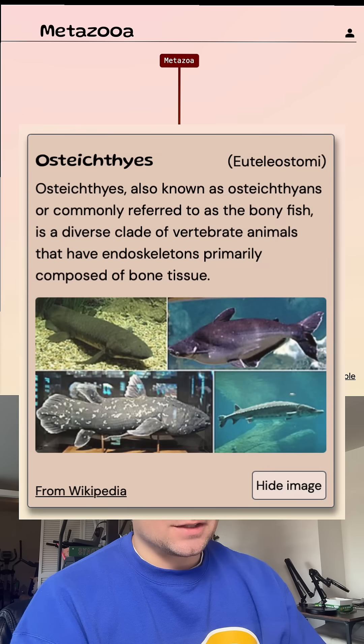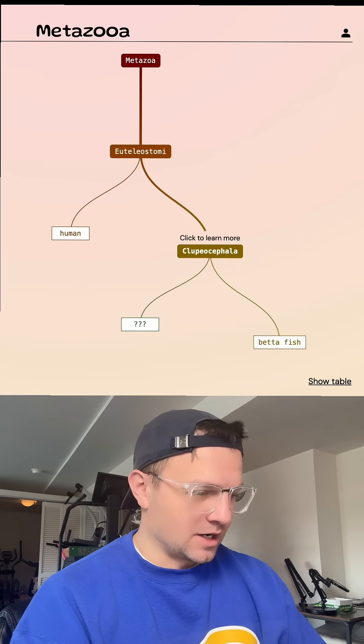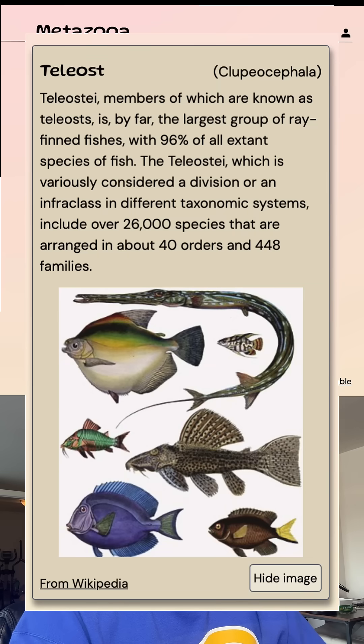So this osteichthyes group means it's probably gonna be a fish. Let's start out with betta fish today. Let's see where that puts us. All right, so we did get a smaller grouping here. Looks like it's a ray-finned fish.